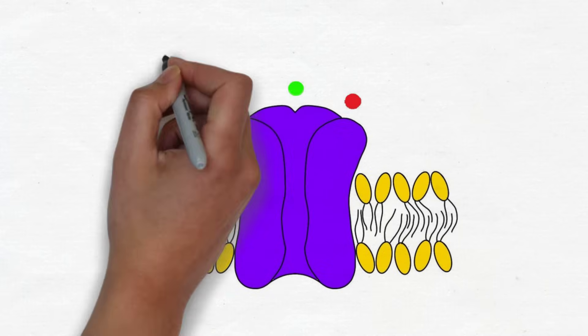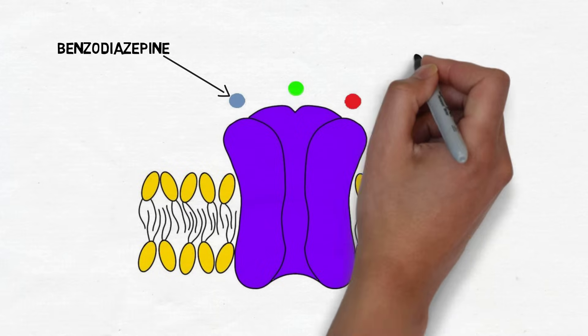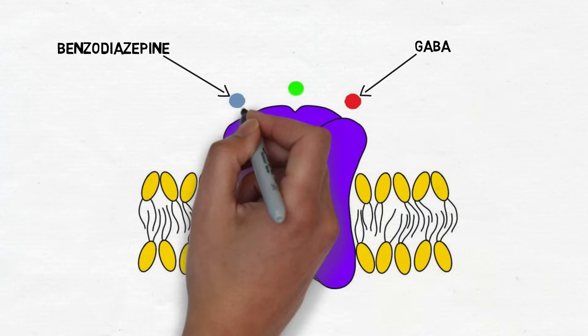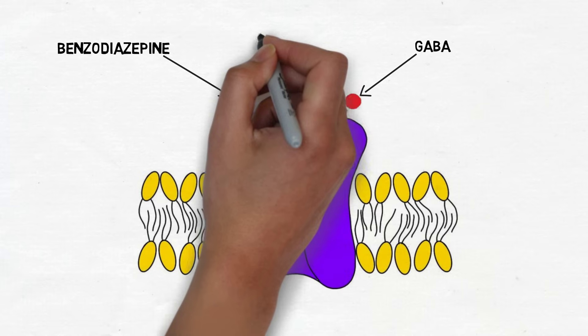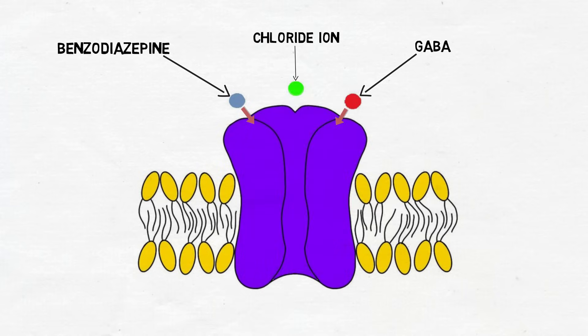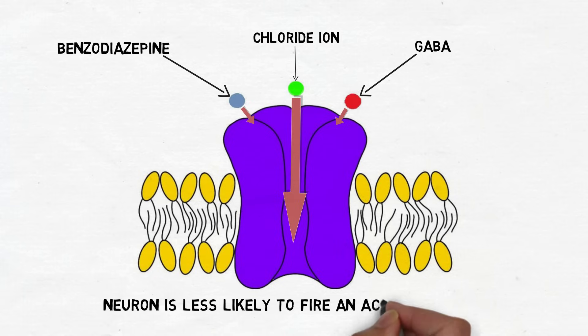That effect is to open an ion channel and allow the passage of negatively charged chloride ions into the neuron. This influx of negatively charged ions pushes the membrane potential further from zero, or hyperpolarizes it, and makes it less likely the neuron will fire an action potential.